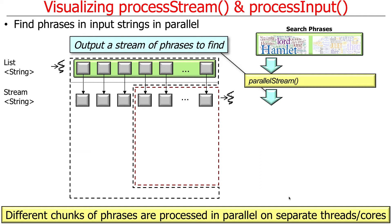Just to make this diagram easy to understand, I have two threads, but keep in mind that the number of threads in practice is really a function of the number of cores you have on your machine. If you have a dual-core machine, it'll probably look like this. If you have a quad-core machine, it'll probably have four chunks going in parallel. So all these chunks are processed in parallel on separate threads or cores, and it's an implementation decision how big each chunk is.